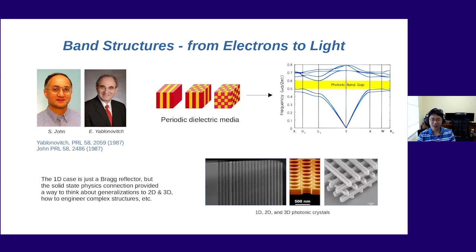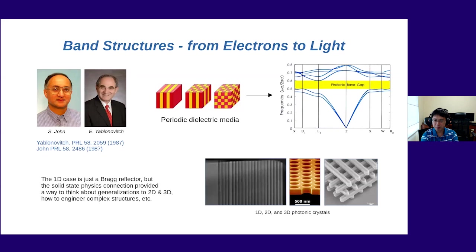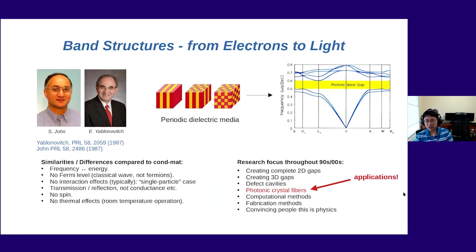The one-dimensional version of a photonic crystal is just a Bragg grating, which considerably predates the photonic crystal as formulated by Sajeev John and Yablonovitch. Nonetheless, these authors provided a conceptual framework to think beyond the 1D case to 2D and 3D photonic crystals. This would provide a way to trap light — if light cannot propagate within a photonic crystal at certain frequencies, it is essentially a highly efficient mirror. Compared to condensed matter physics, there are lots of similarities, but also striking differences.